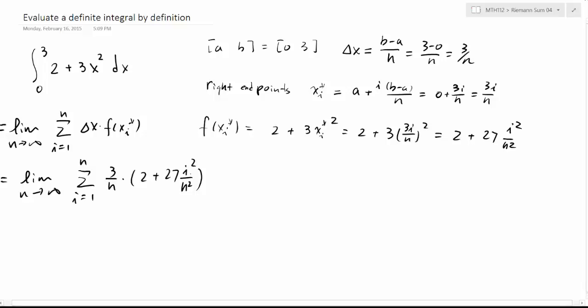Now we are going to try to find the sum, then we take the limit. Because this is just a sum, we can regroup them, and this is the regrouping part. Also remember, when we are taking the sum, i is the index, n is fixed. So we can actually have something like this: 6 over n, i goes from 1 to n, and then another sum where i goes from 1 to n. We have 3 times 27, which is 81, so we have 81 divided by n cubed because we have n multiplied by n squared, and then we have i squared.